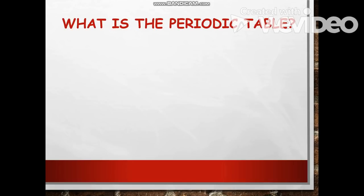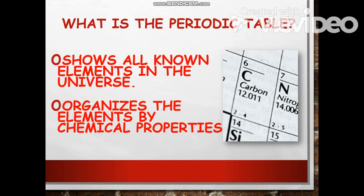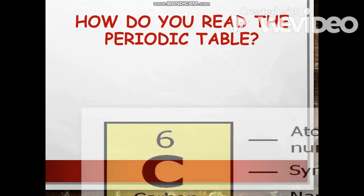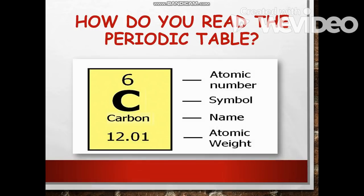So what is the periodic table of elements? It shows all known elements in the universe. It organizes the elements by their different chemical properties and different characteristics in the periodic table.